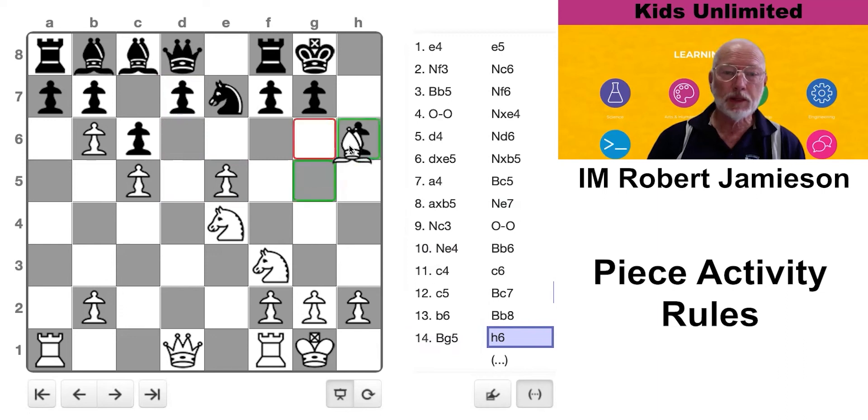Now I look for a little moment at bishop takes pawn, pawn takes bishop, knight f6 check, and it's sort of a promising attack, but I couldn't see anything concrete. So I thought, well, let's just keep it simple. Let's keep the pin.